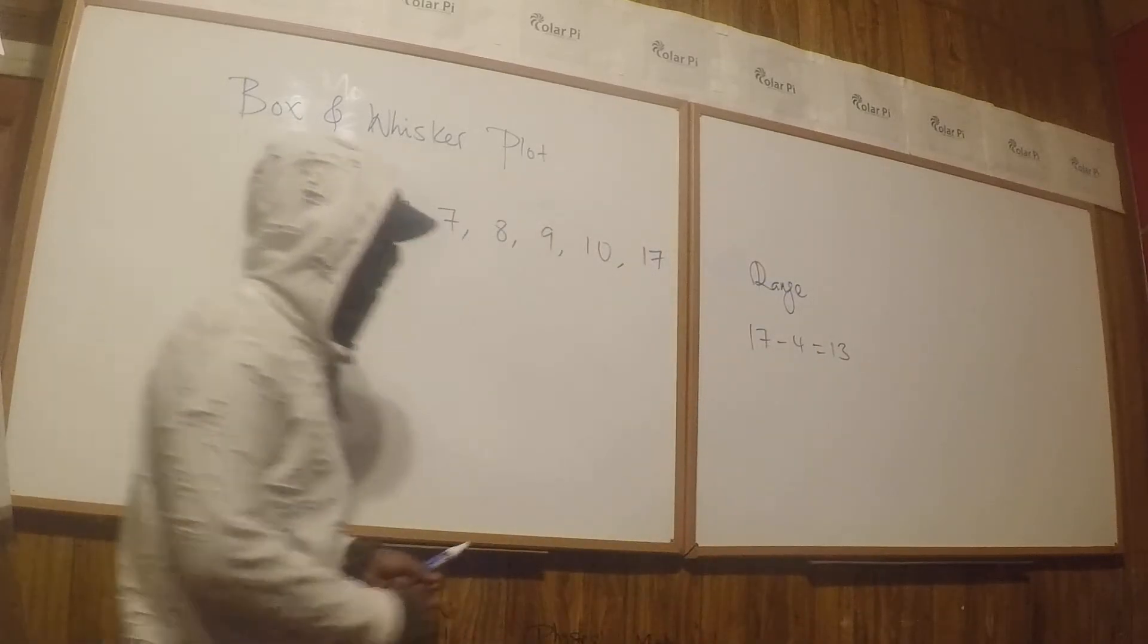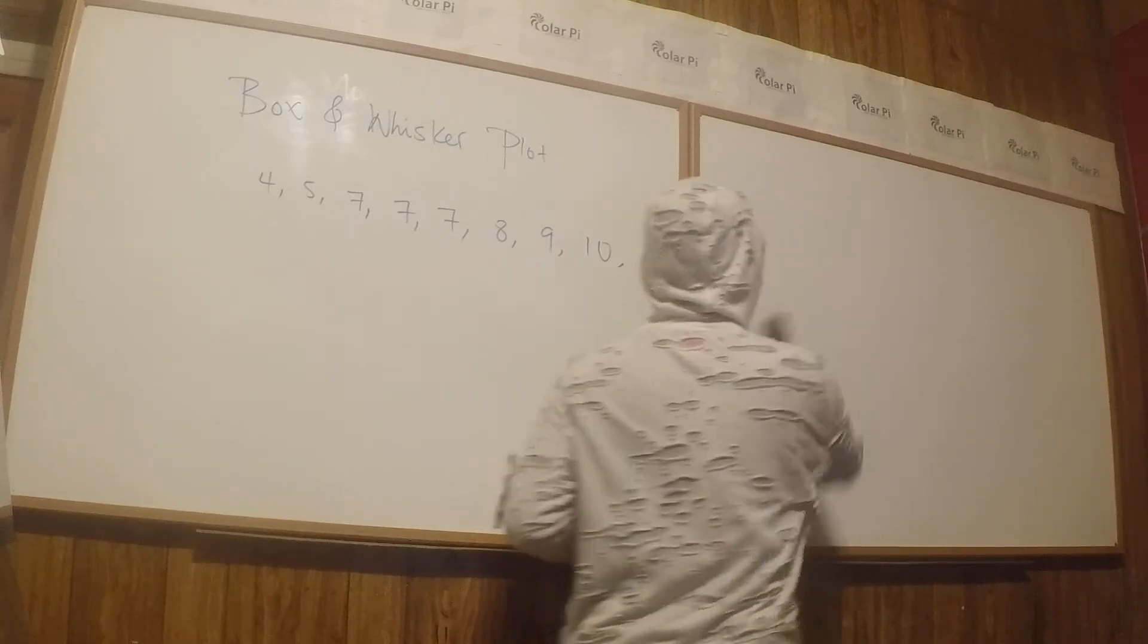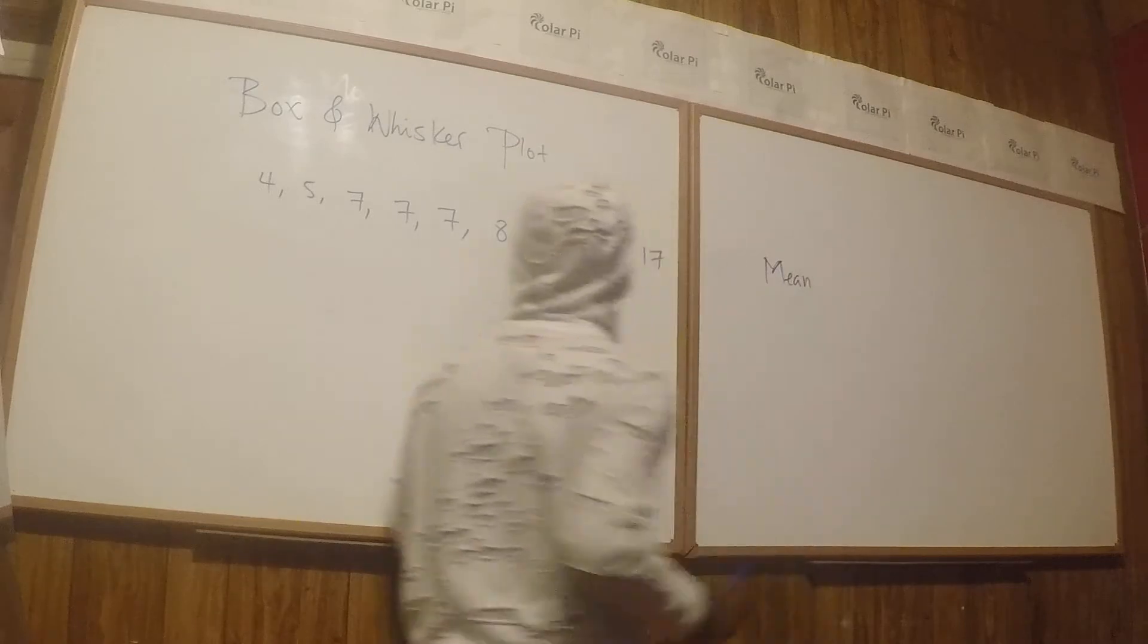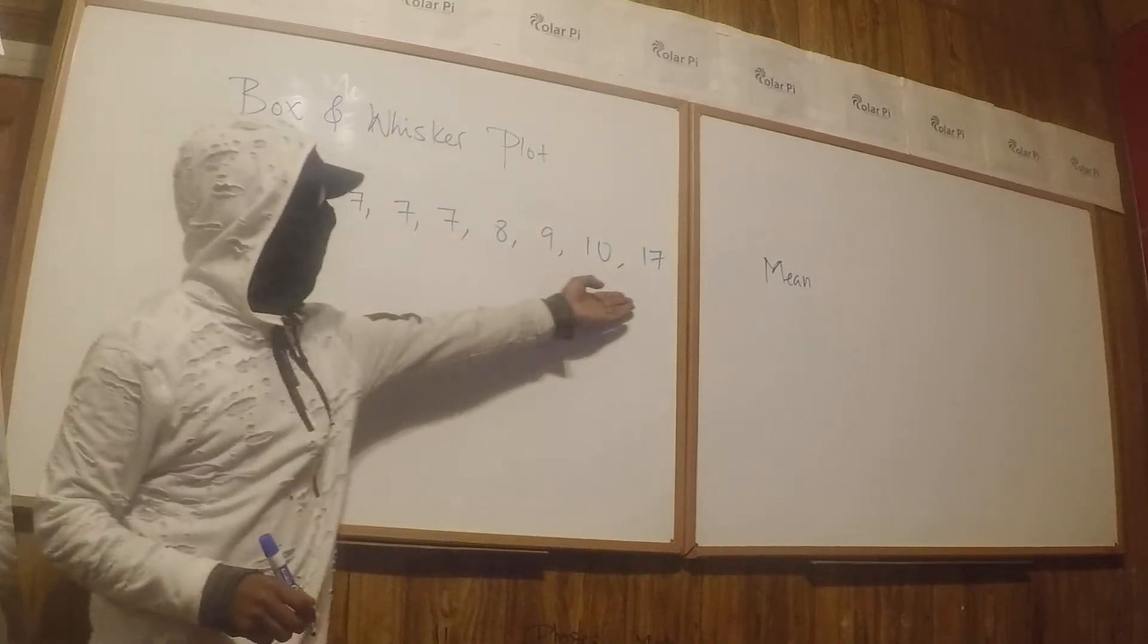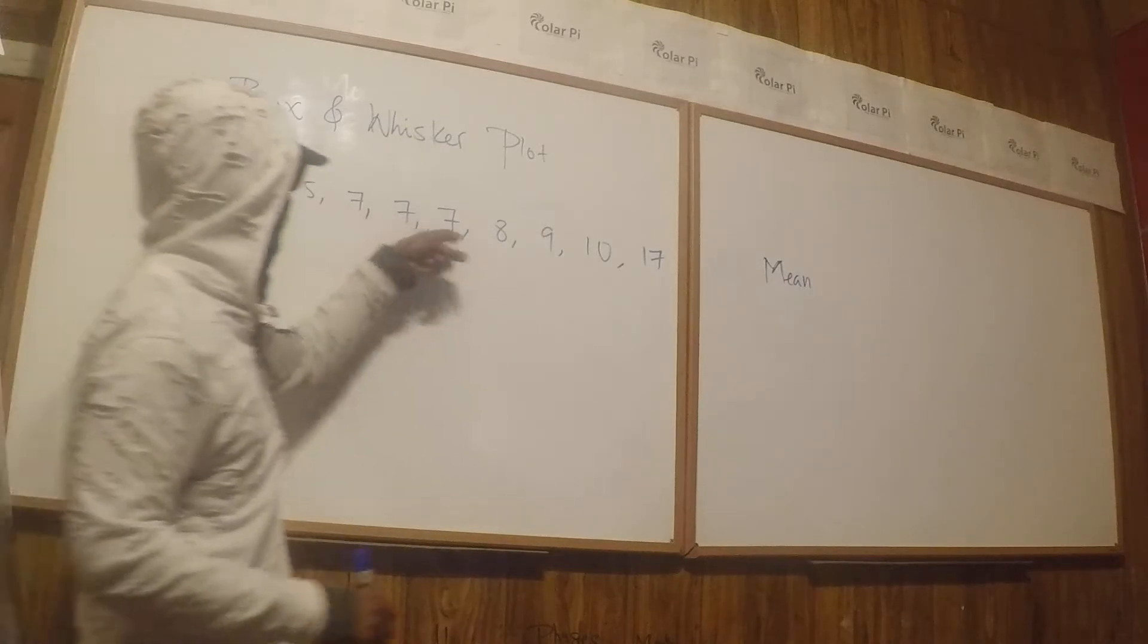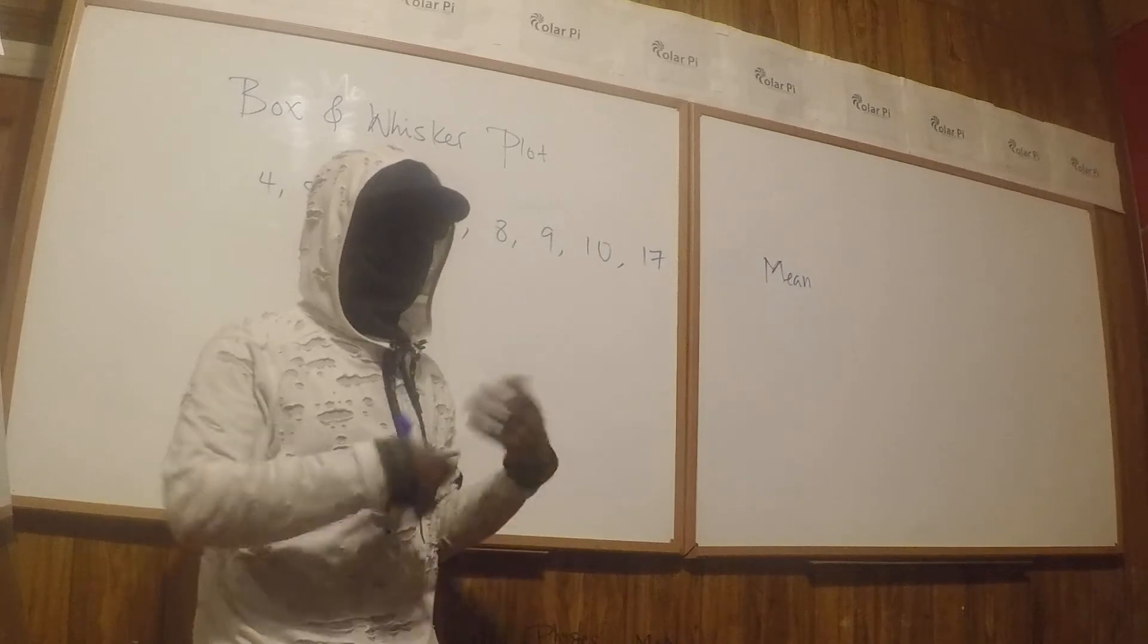The mean is the average. So you'd add all these numbers up—I believe I have nine of them now—so you'd add them up and divide by nine. That'd be your mean.